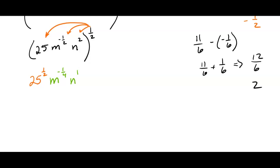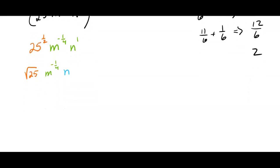Now I'm going to think, well what's 25 to the 1 half? That's the square root of 25. I'll deal with the m to the negative 1 fourth in a minute. And then the n to the first power is just n. So we're about ready to have our final answer. The square root of 25 is just going to be 5. That m to the negative 1 fourth, that's going to move to the denominator. So it's going to be m to the 1 fourth. And then the n is just going to be up in the numerator. And that's going to be my answer.